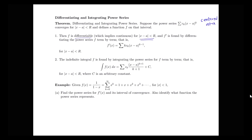We can find our derivative by just differentiating our power series term by term. So if f(x) equals the sum of Ck times (x minus a) to the k, then f prime is just going to be the sum of k times Ck times (x minus a) to the k minus 1. We're able to use the power rule on each term, and it's going to have the same radius of convergence.